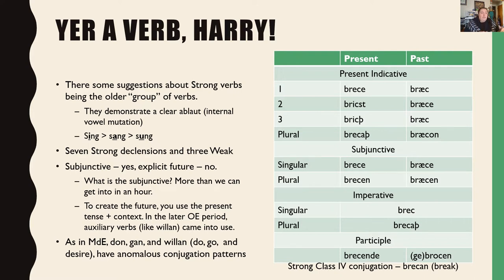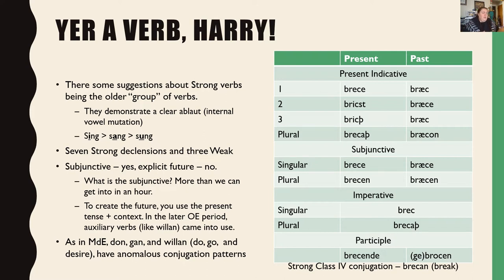Verbs — we have strong and weak verbs. The strong verb is thought to be the older form, and they demonstrate internal vowel mutations: sing, sang, sung — that changing internal vowel is how we classify different strong verbs, and there are seven classifications. Then three classes of weak verbs that don't show that internal mutation. Old English has the subjunctive — they used it all the time and inflected separately for it. They did not, however, have an explicit future tense. Latin totally has a future tense; in Old English you mostly just use context and auxiliary verbs. 'I go to the store next week' — that trip is in the future, but there's no change to the verb.